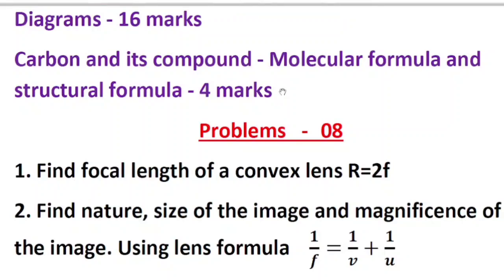The next thing you should concentrate on is problems, because problems carry eight marks. The first compulsory problem is: find the focal length of a convex lens given the radius of curvature. This question was asked in the model question paper and also in the state level preparatory exam. If you know the relationship between R and F, you can easily score two marks. The formula is R = 2F, so given R, you can easily find the focal length.